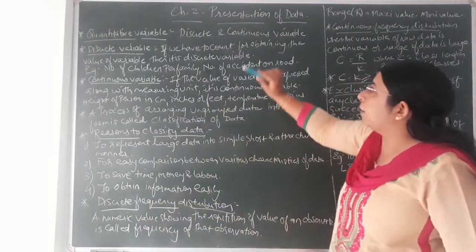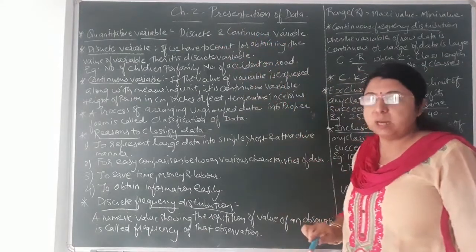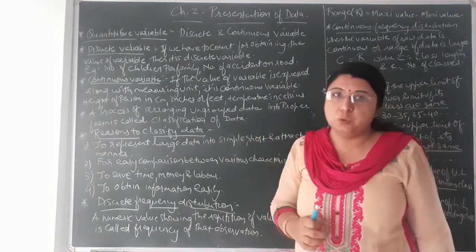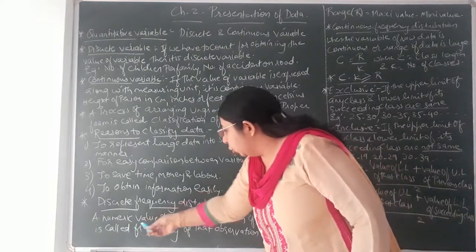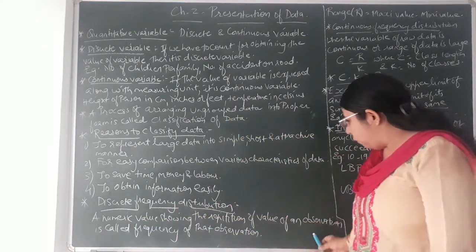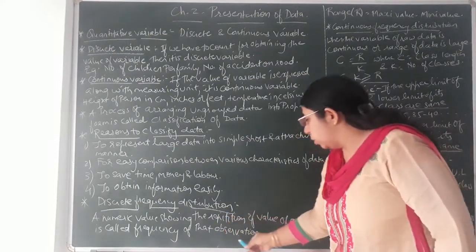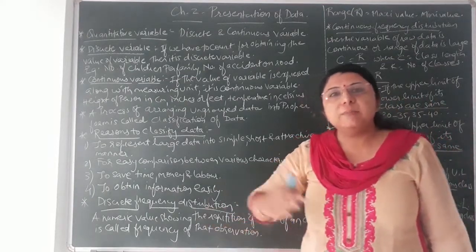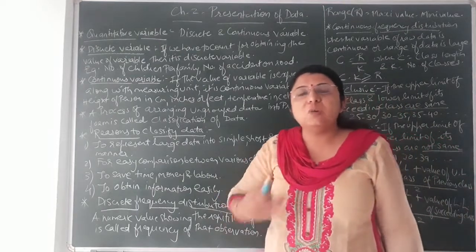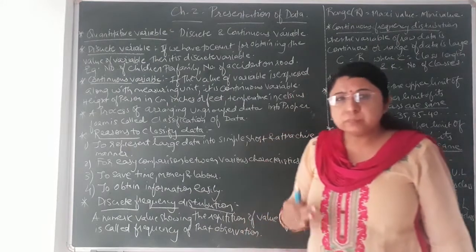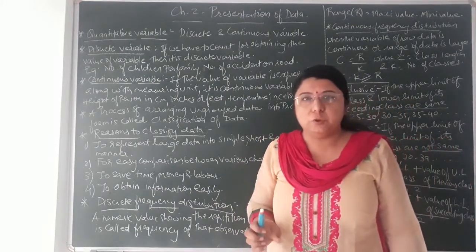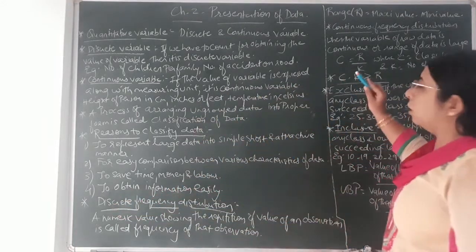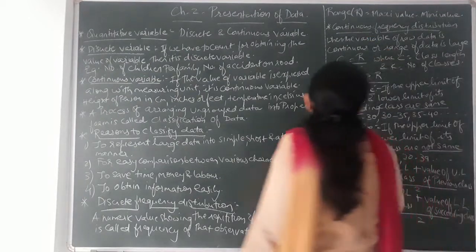After understanding discrete and continuous variables, let us understand discrete frequency distribution. A numeric value showing the repetition of an observation is called the frequency of that observation — for how many times that same value is repeated. Before understanding discrete frequency distribution, we need one basic formula: range. Range is the difference between the highest and lowest values in the data.